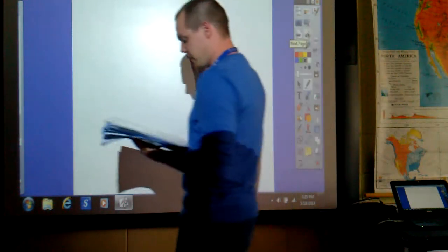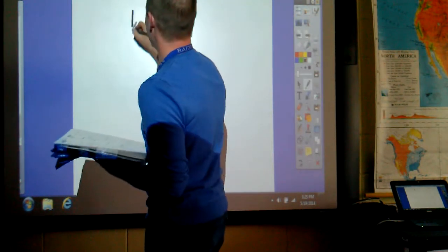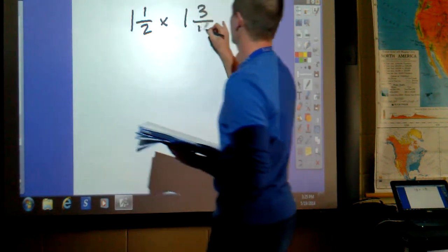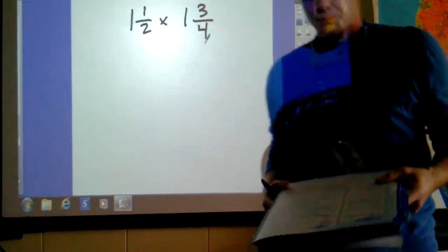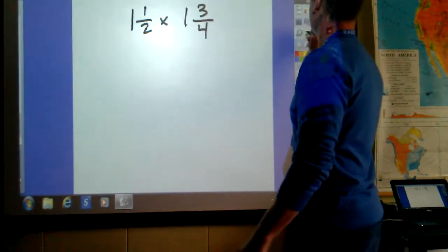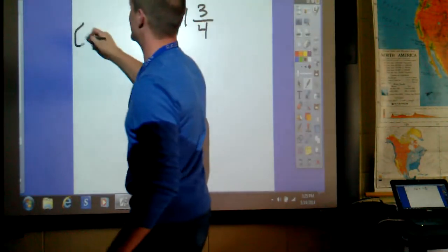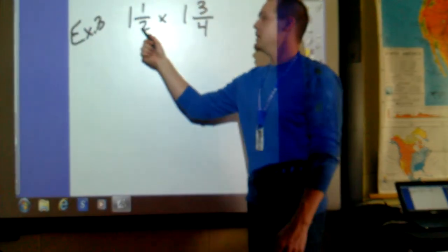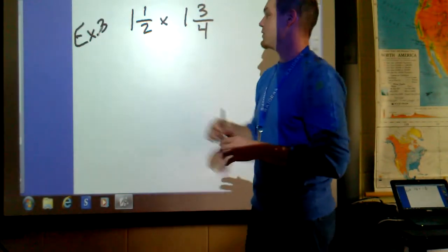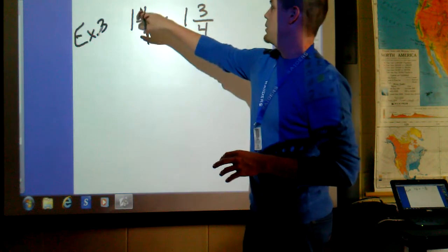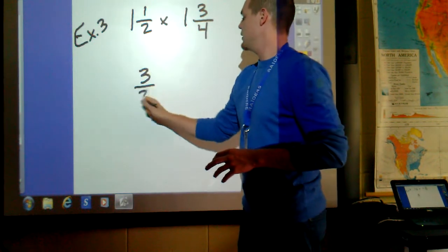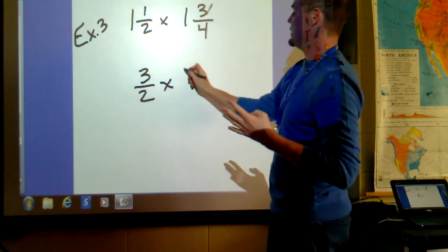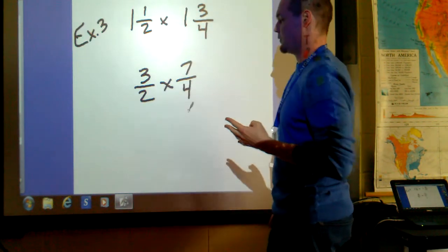Example 3. We're going to do practice problem A. 1 and a half times 1 and 3 fourths. We'll do this one. I said example 3. We have to change both of these mixed numbers to improper fractions. 1 times 2 is 2. Plus 1 is 3 halves. Multiply that by 1 times 4 is 4. Plus 3 is 7 fourths.